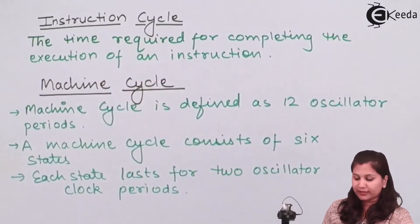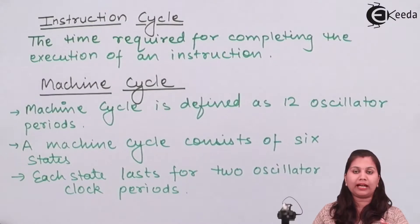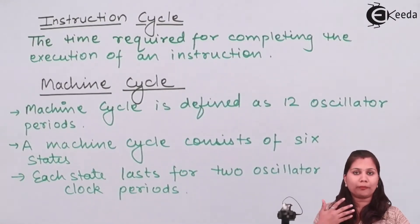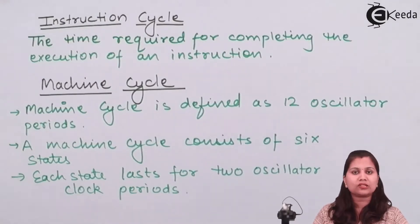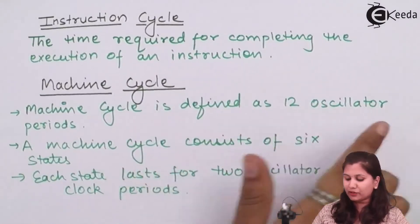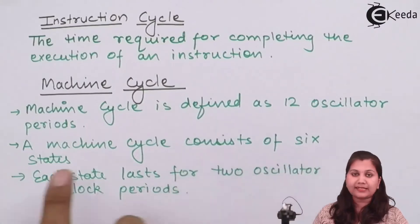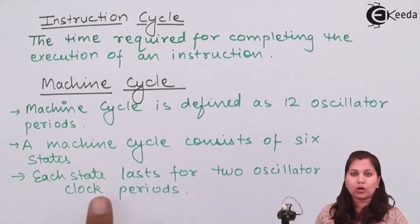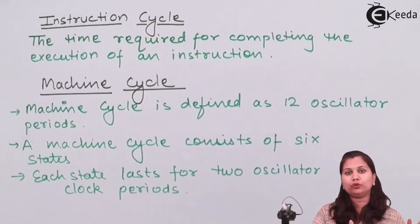A machine cycle is defined as 12 oscillator periods. In every microcontroller we have an oscillator which provides the clock frequency to all the internal circuitry. All operations — read, write, or any external input/output operations — are related to the oscillator frequency, the clock frequency. So one machine cycle equals 12 oscillator clock periods. Within one machine cycle there are six states, and each state lasts for two oscillator clock periods.